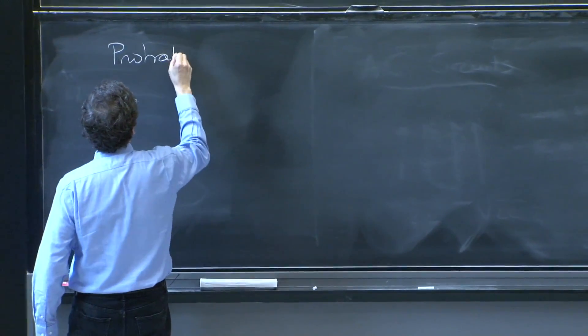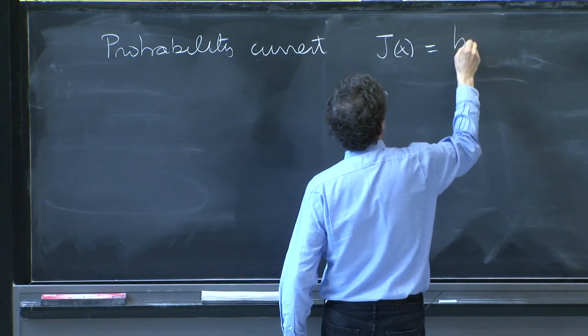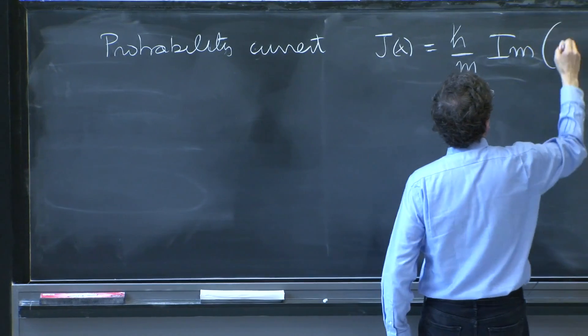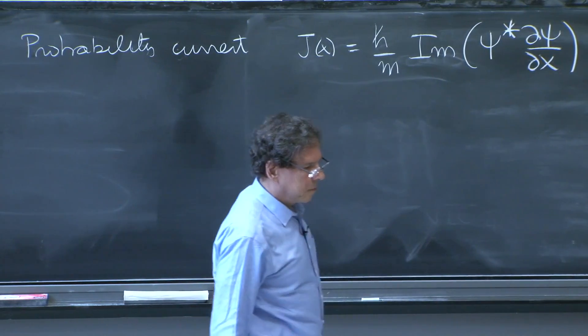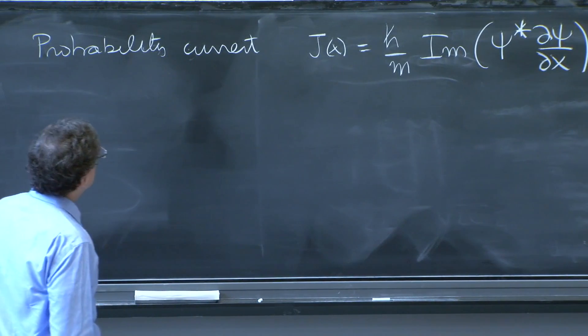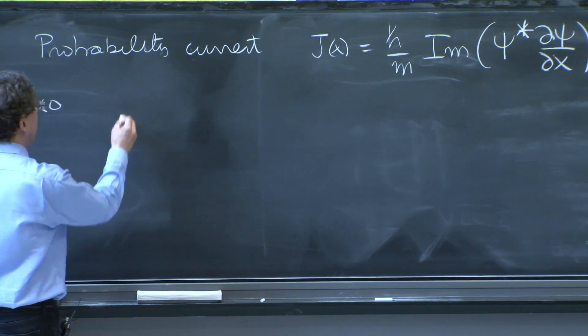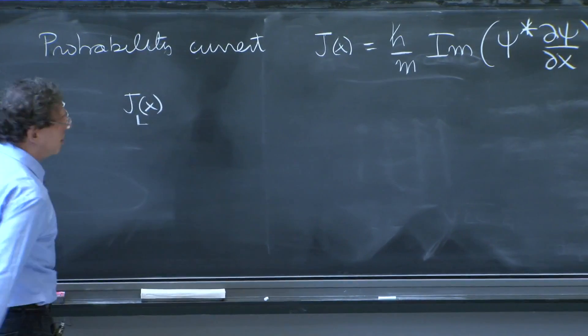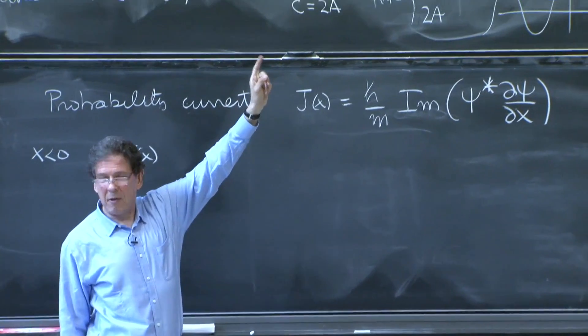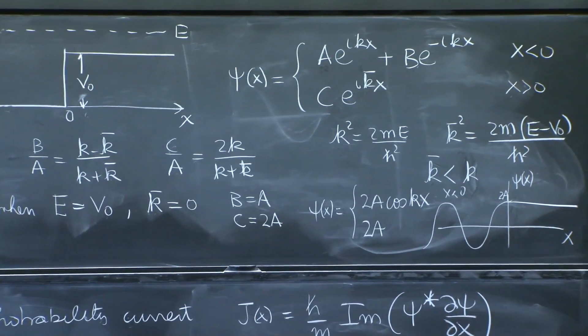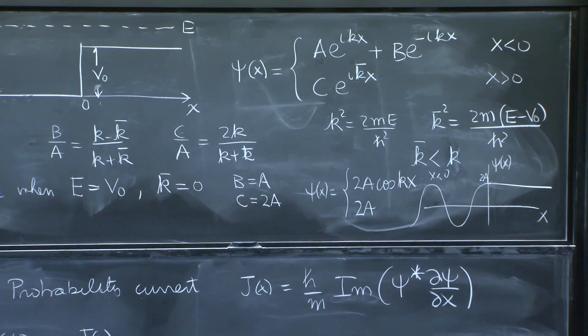So probability current gives you a way to quantify some of the things that are happening here. So probability current was J(x), which was ℏ/m, imaginary part of ψ* dψ/dx. So let's compute the probability current. Let's compute for x less than 0. What is the probability current? J(x). We can call it the probability current on the left side. I would have to substitute the value of the wave function for x less than 0, which is the top line there, into this formula, and see what is the current.